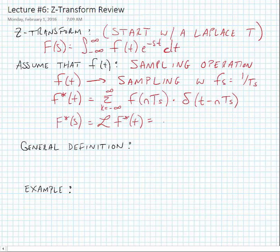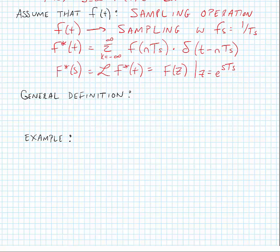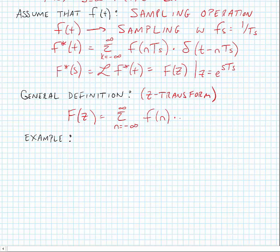This new function would be a function in z, F of z, where z is equal to e to the sT_s. This leads to the general definition for our Z-transform. Our general definition is F of z equals the summation from n equals minus infinity to infinity of some function little f of n times z to the minus n.